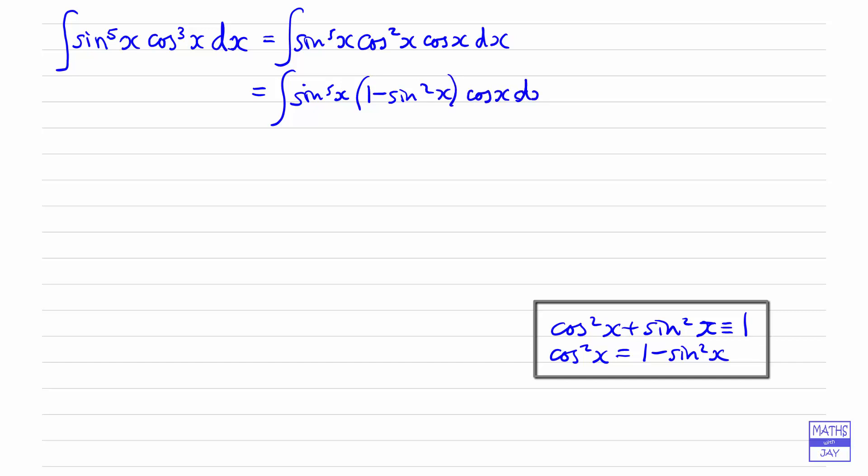We're going to be able to use our u substitution, aren't we? Let's just simplify this a little bit more. So I'm going to multiply out the bracket. We've got sine to the power of 5x times 1. So that's simple. And then sine to the power of 5x multiplied by sine squared. So that's going to be a power of 7. And we've still got cos x.